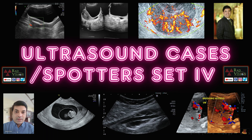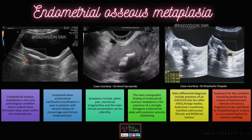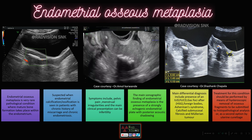Good evening all, welcome to this ultrasound cases and spotters set 4. This is the first case. Here you can see there are dense echogenic calcifications noted in the endometrium, and also here you can see there are dense calcifications and even ossifications in the endometrium with post-acoustic shadowing.